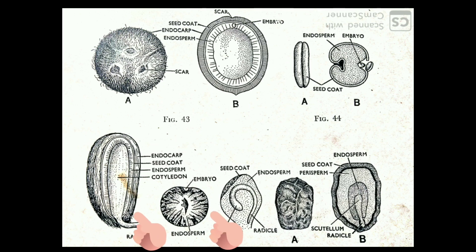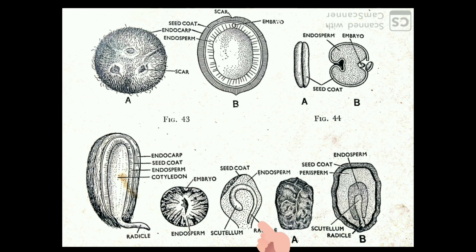The small black seed of onion is covered by a seed coat. The inside is filled with a tough semi-transparent endosperm, within which a curved embryo is embedded. The embryo shows a radicle on one end and a scutellum on the other. The plumule is not seen at this stage — it develops later.